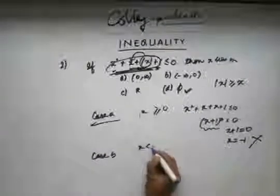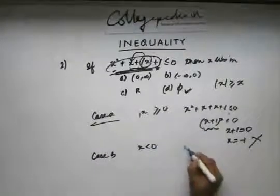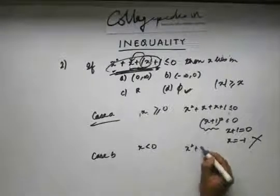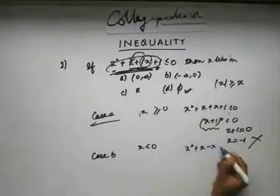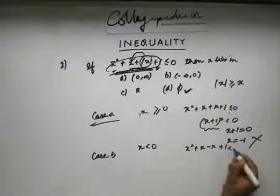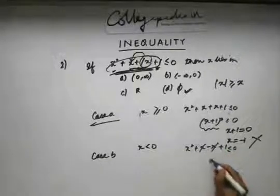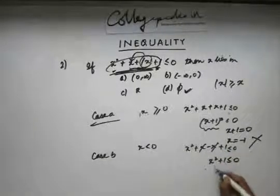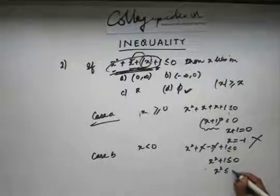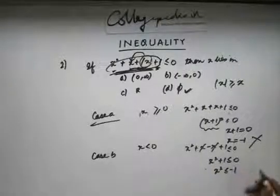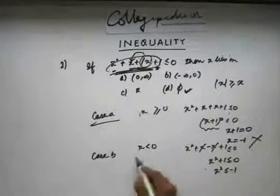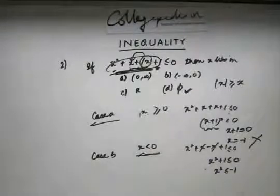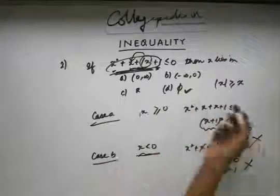Second case: when x is less than zero. Writing mod x as −x, the x terms cancel and we get x² + 1 ≤ 0, which means x² ≤ −1. This is also not true for any value of x. So again we don't get a solution in the second case either. The answer is D (no solution).